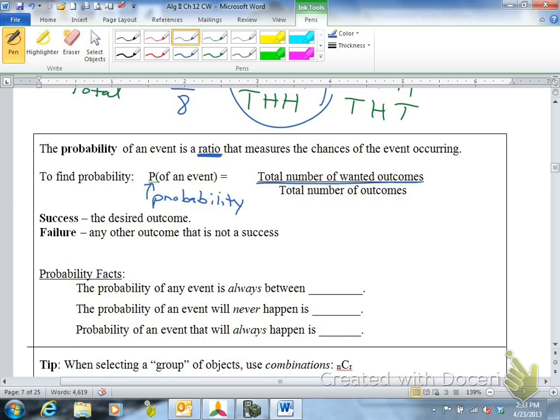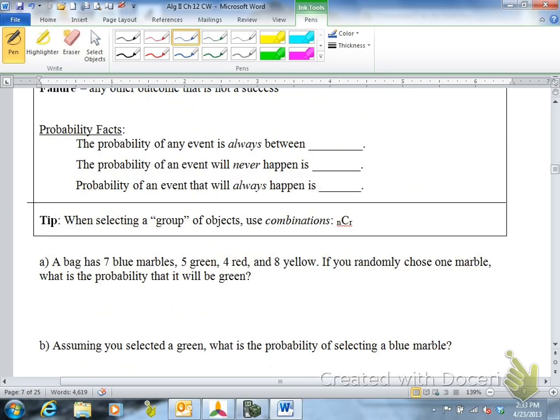Probability facts, and then we'll try some examples. Probability of an event is always between zero and one, which is kind of nice in this section. If you get an answer that's like 17, then you did something wrong. You should get an answer that's a decimal, which you can change to a percentage. So all your answers should be between zero and 100 percent. The probability of an event that will never happen is zero, or zero percent.